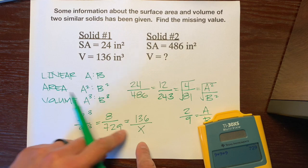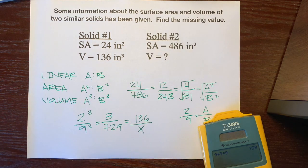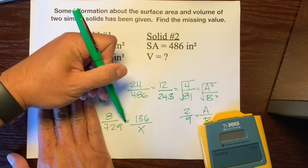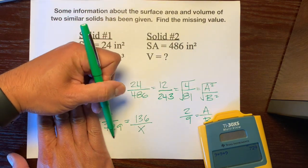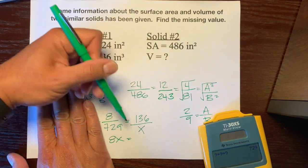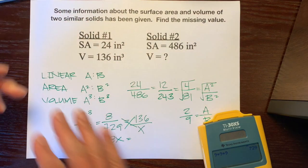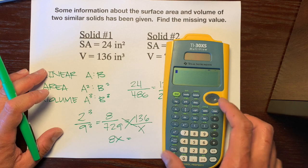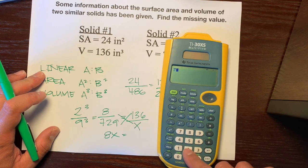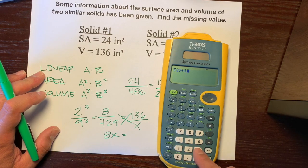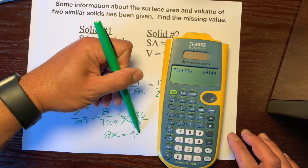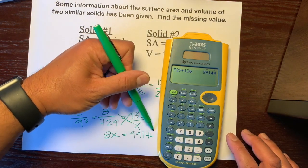So, now we have this proportion. And how do we solve proportions? We're just going to cross-multiply. So, 8 times x is 8x is equal to... Let's use our calculator. Let's see. So, 729 times 136 is 99,144.